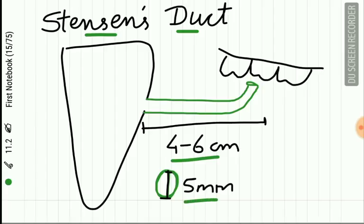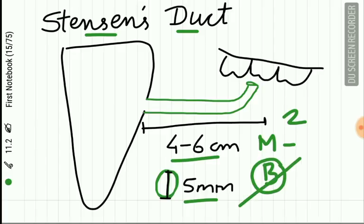Stenson's duct crosses two muscles: the masseter muscle and the buccinator muscle. It crosses the masseter muscle but pierces the buccinator muscle, and opens into the oral cavity at the level of the upper second molar tooth.